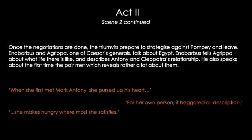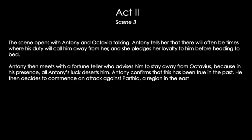Scene 3. The scene opens with Antony and Octavia talking. Antony tells her there will often be times where his duty will call him away, and she pledges her loyalty before heading to bed. Antony then meets with a fortune teller who advises him to stay away from Octavius because in his presence all Antony's luck deserts him — Antony confirms this has been true in the past. He then decides to commence an attack against Parthia, a region in the east.